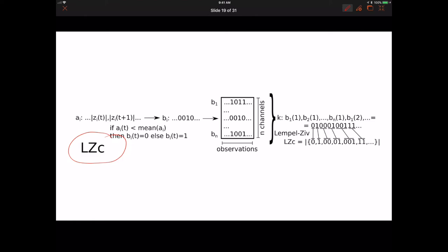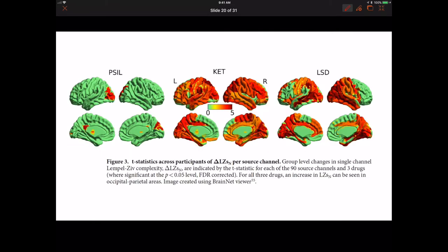Complexity can be analyzed by the Lempel-Ziv algorithm. You can see that all these compounds increase complexity. Ketamine does. The same is true for LSD and psilocybin. If complexity is a hallmark of consciousness, then these drugs may indeed produce an enhanced form of consciousness.